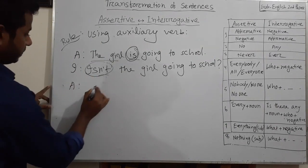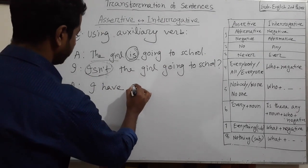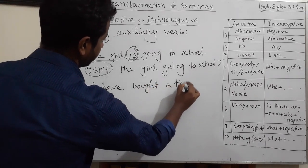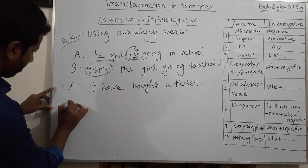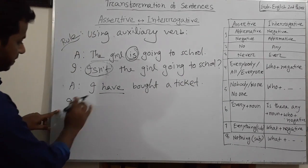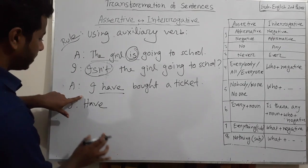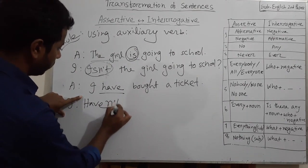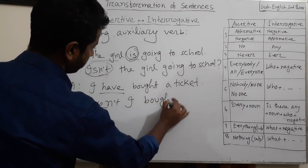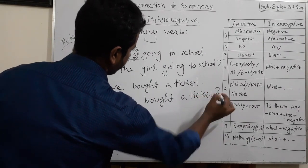Another example. Assertive sentence: 'I have bought a ticket.' Here the auxiliary verb is 'have'. It will be written before the subject. As it is an affirmative sentence, in interrogative sentence it will be negative. So: 'Haven't I bought a ticket?' — auxiliary verb 'have' with negative notion 'haven't', then subject, then verb, then object, then question mark.